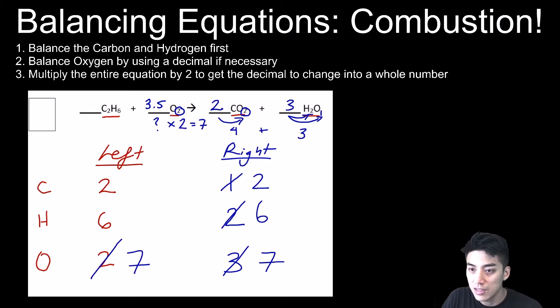So technically at this point, everything is balanced. The count is one, 3.5, two, and three. But because we used the decimal, we have to multiply the entire equation by two so that we get it back to a whole number. So our coefficients now look like this: two, seven, four, and six.